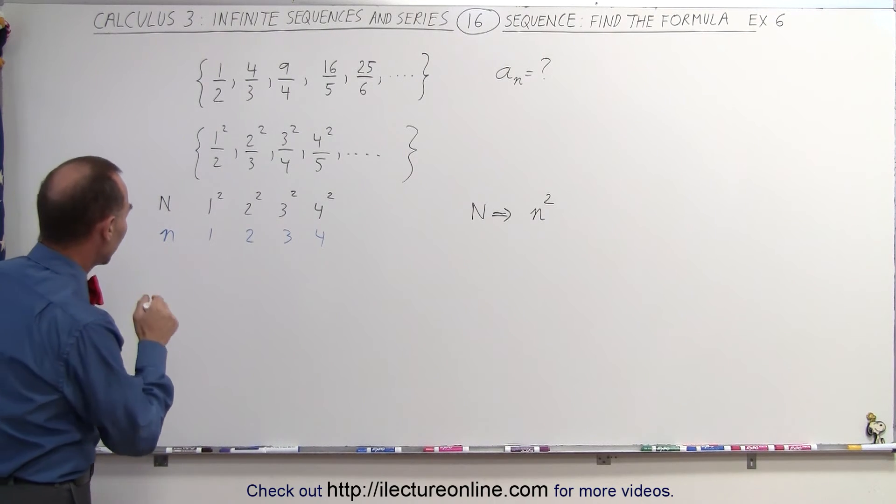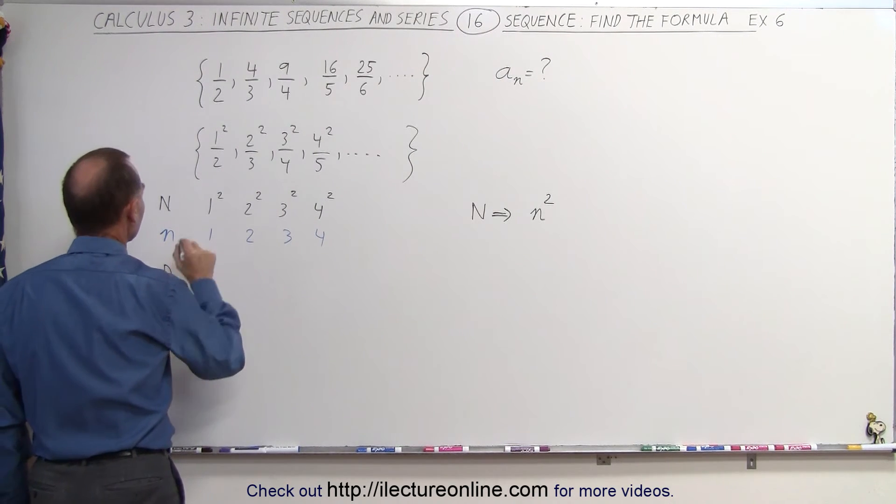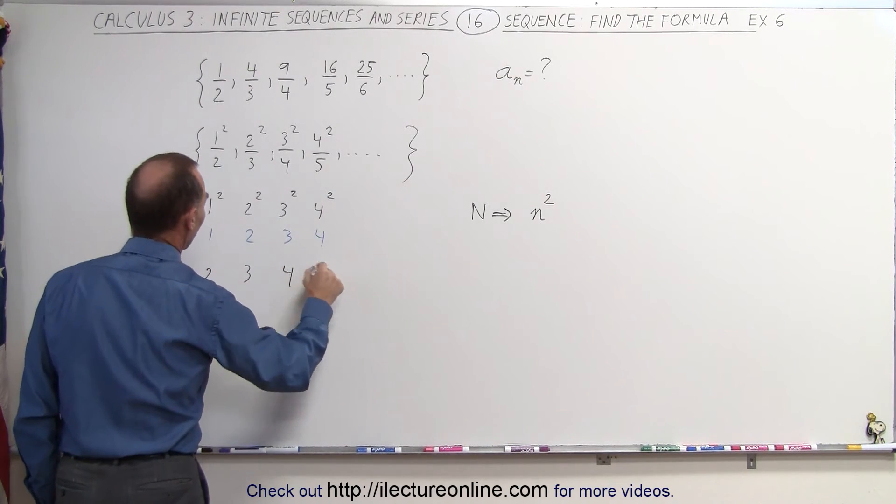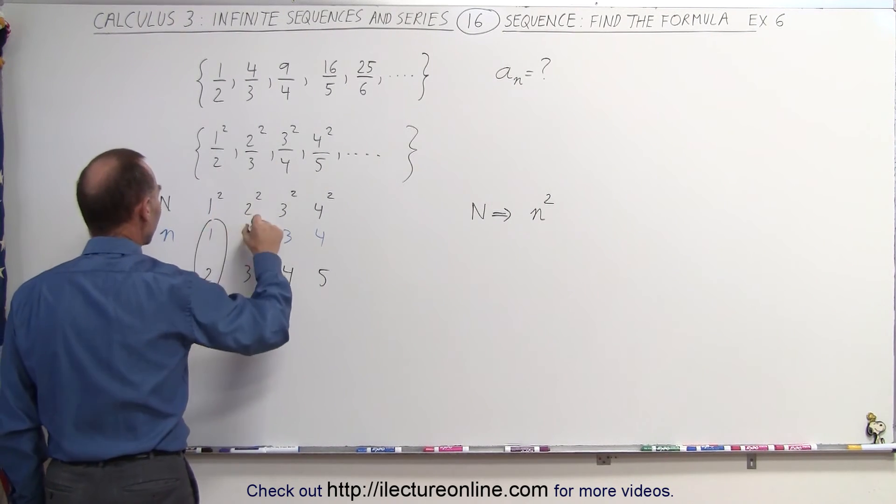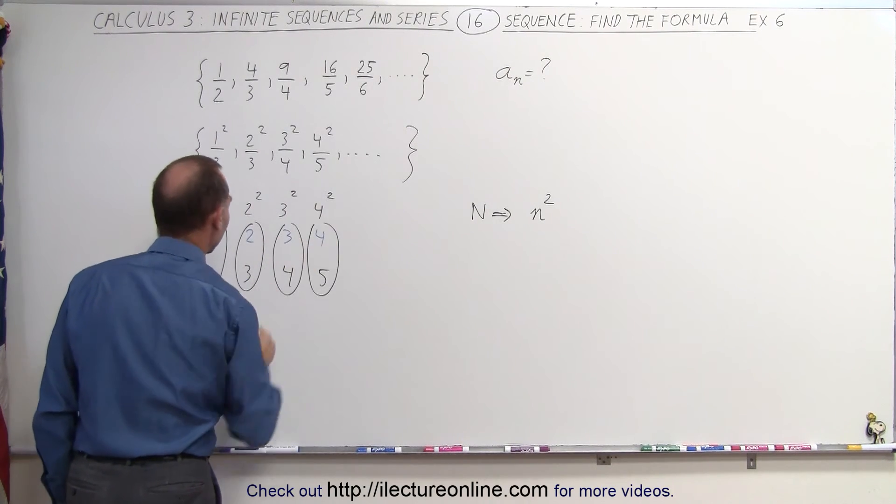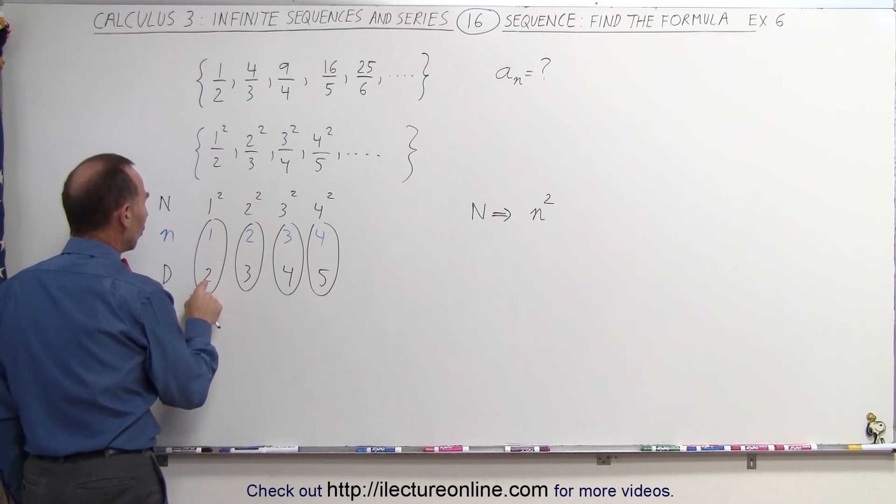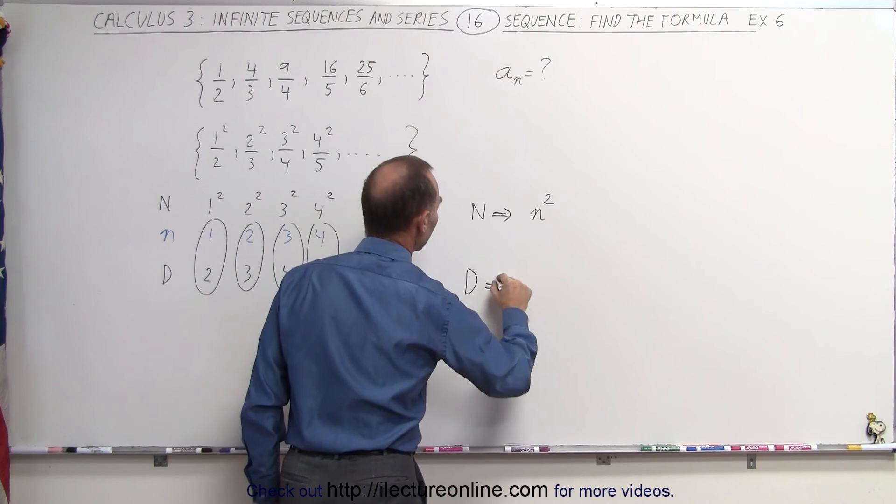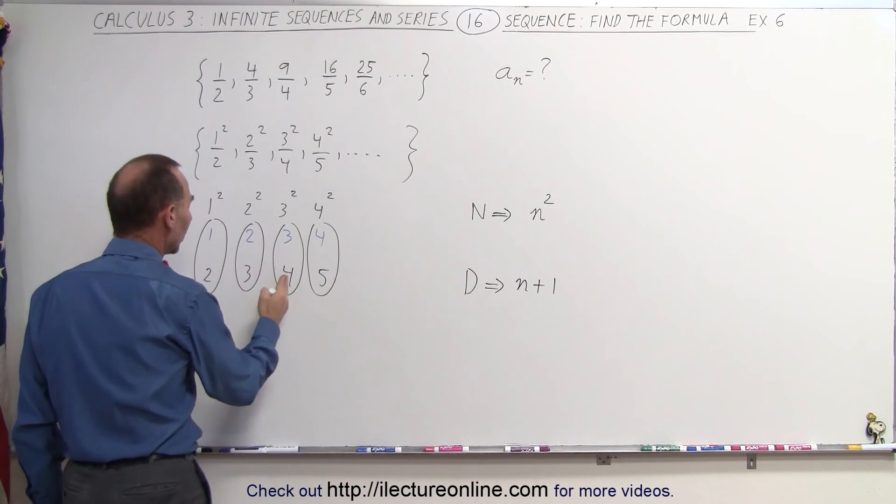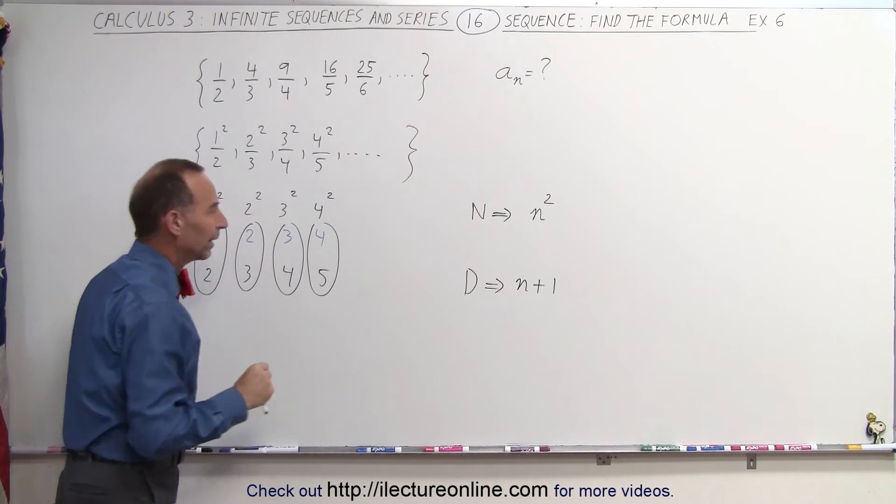What about the denominators? Well, notice for the denominator, this one is 2, this one is 3, this one is 4, this one is 5. So you can see that there's an offset of 1 in each case compared to the value of n. The denominator is 1 more than the value of n, which means the denominator can be written as n plus 1, because in each case the denominator is 1 greater than the value for n.